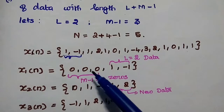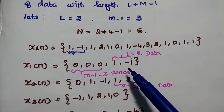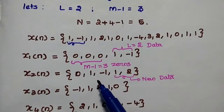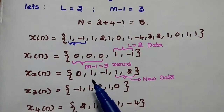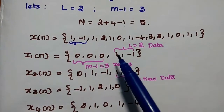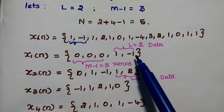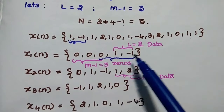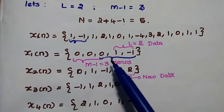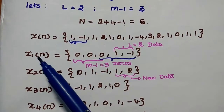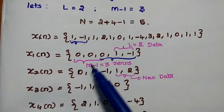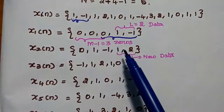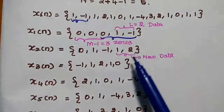So x1(n) is equal to {0, 0, 0, 1, -1}. For the next data block, x2(n) is formed by taking M minus 1 data points from the previous data sequence. So we take the last 3 data points from x1 as the first values of x2. Remember: for the first sequence alone, take M minus 1 zeros; from the next sequence onwards, take M minus 1 data points from the previous block and the remaining 2 new data values from the input sequence.